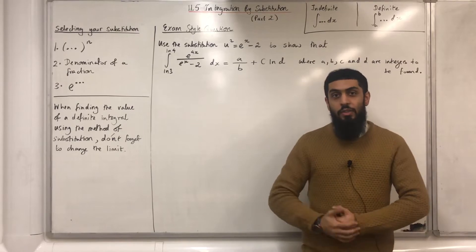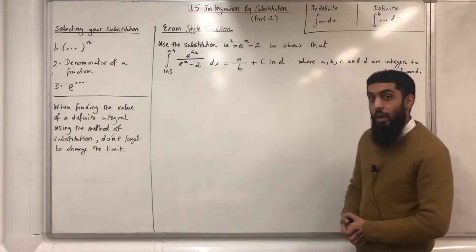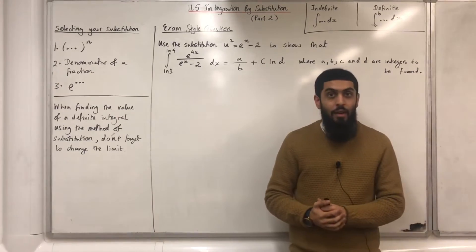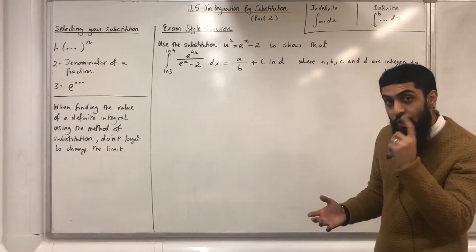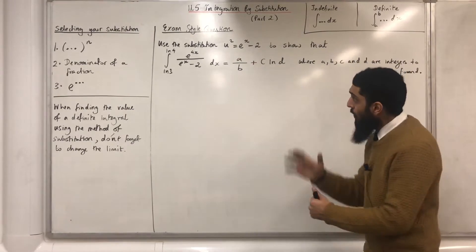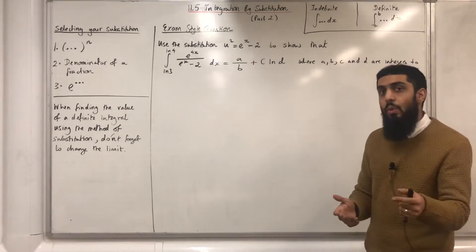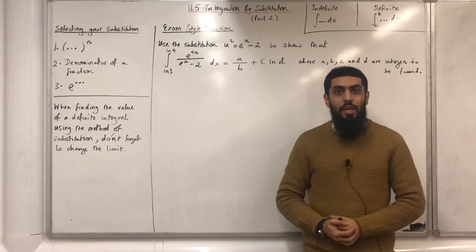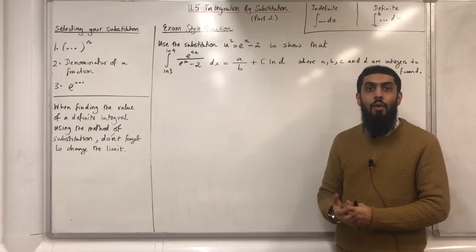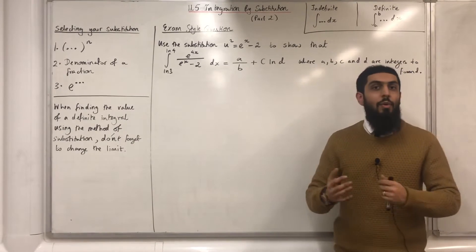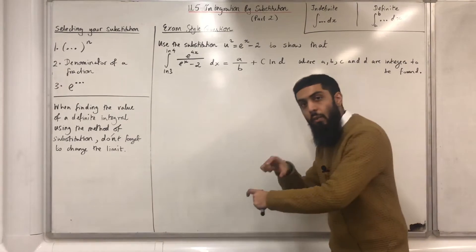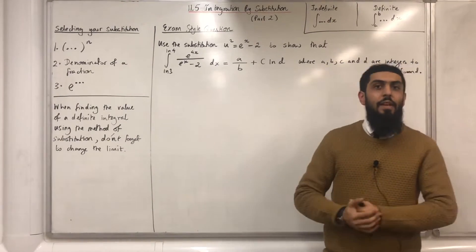Here is another exam style question — this one is looking more crispy than the previous one. Our substitution now is u² instead of u. Looking at the substitution u² = eˣ − 2, neither u nor x is the subject, so it is an implicit equation. In this particular question, when we use the method of substitution, we will be using implicit differentiation.